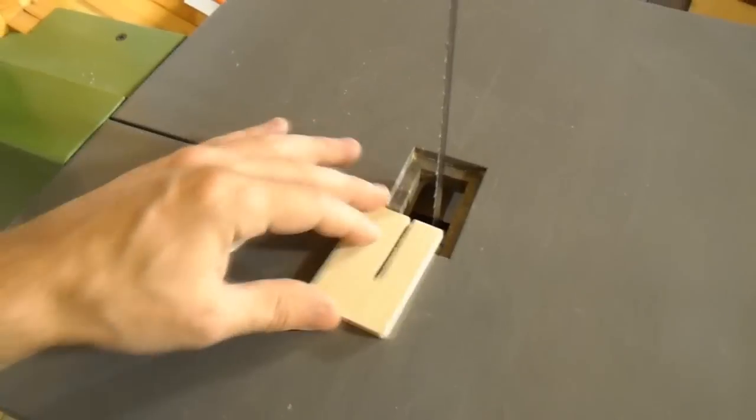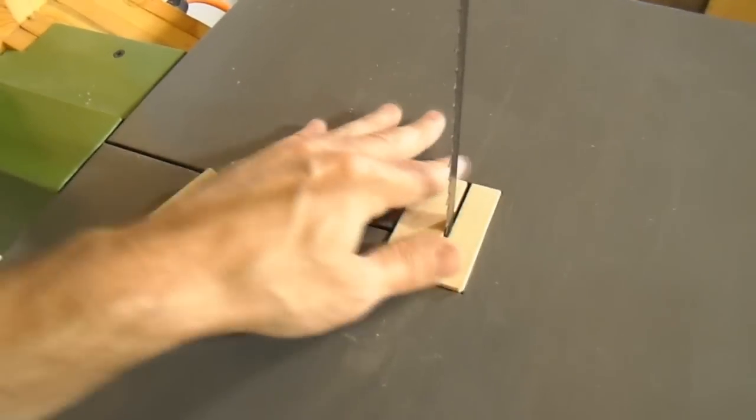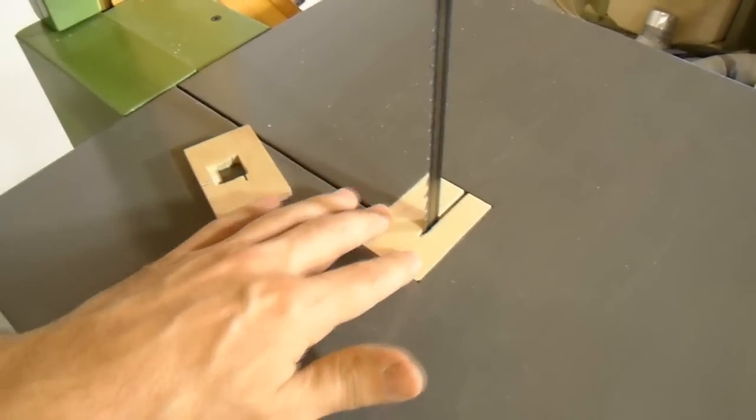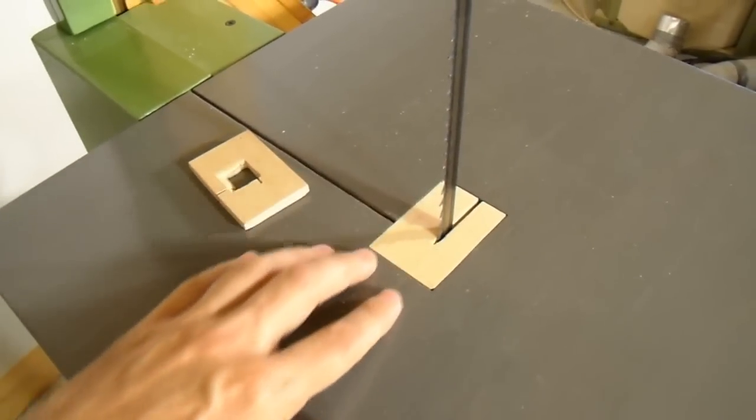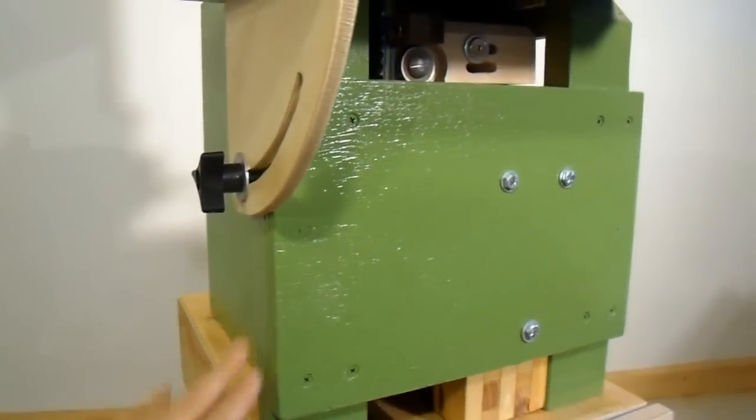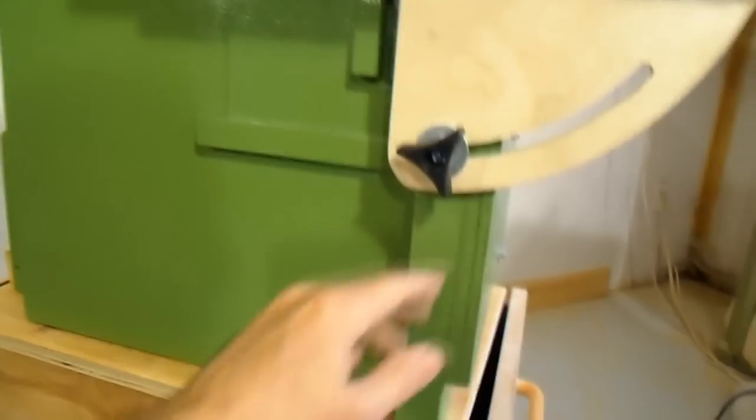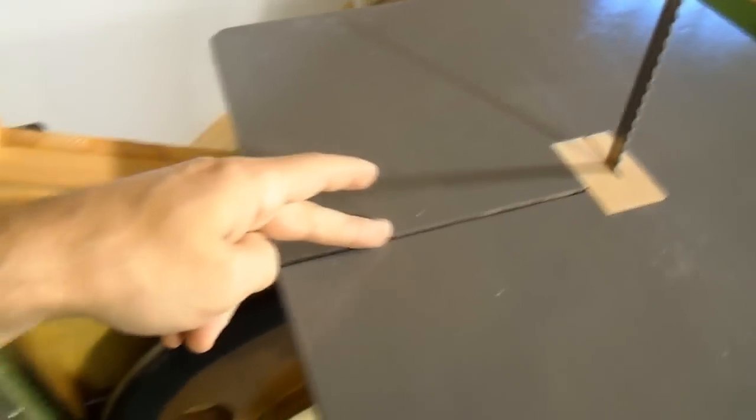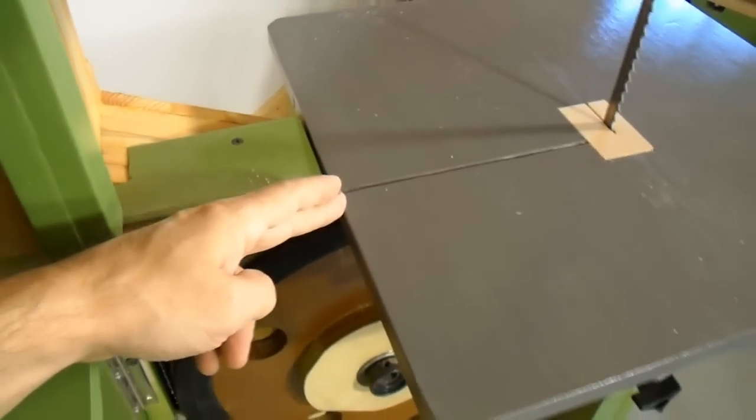But if I put different inserts in there there's a risk that I might forget that I put the 90 degree insert in there and then tilt the table and at that point I'd bend the blade. Another design change is that the table support actually comes around the right side instead of the left side. That means you can't get the blade out this way. The blade has to be removed coming out to the left. But that turns out to be not a problem at all.